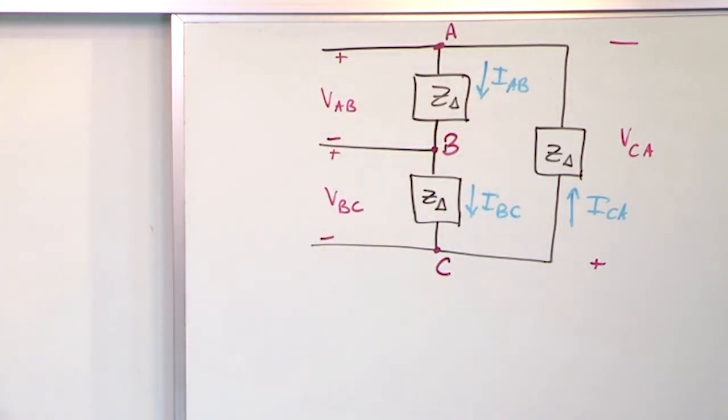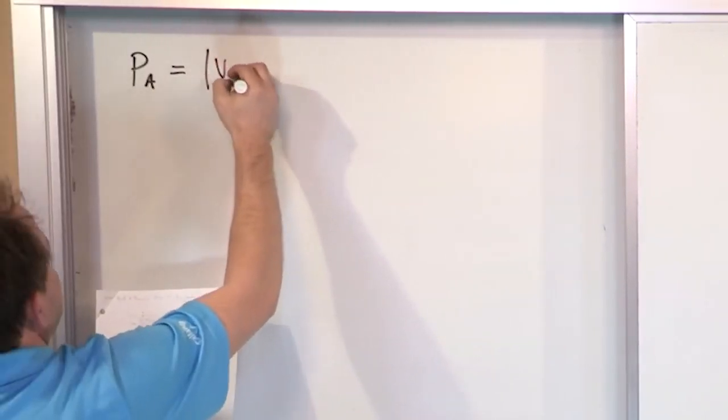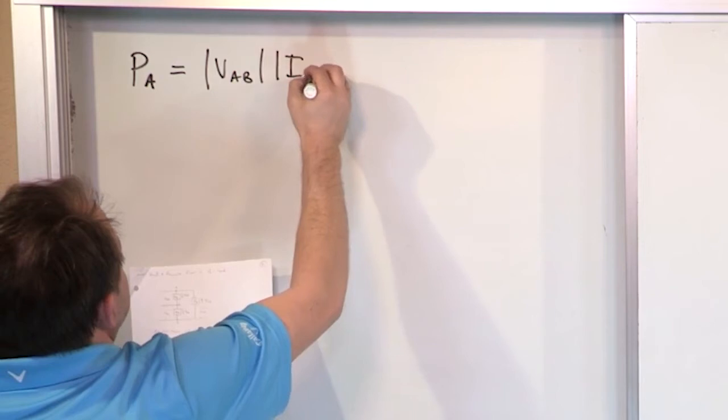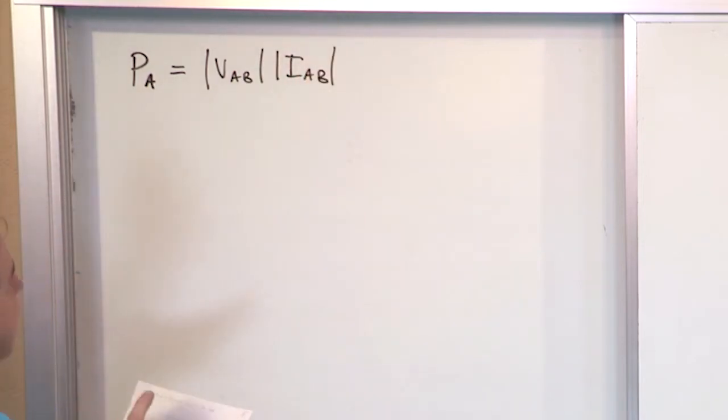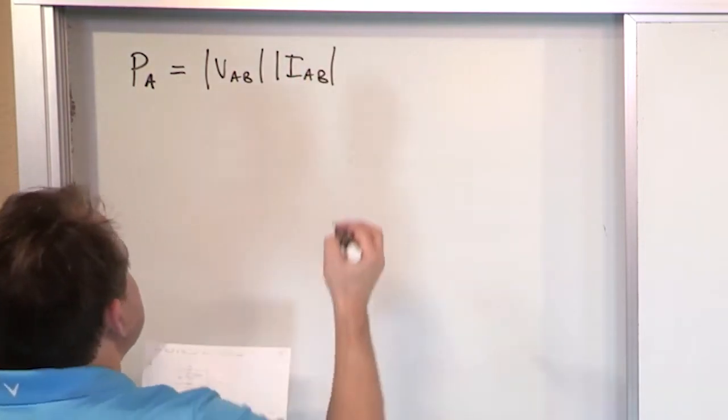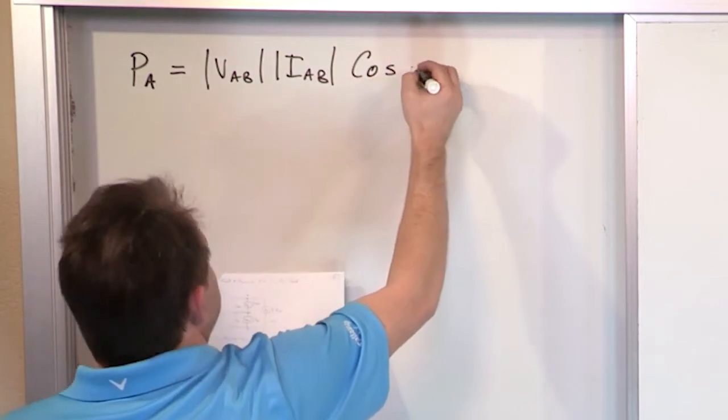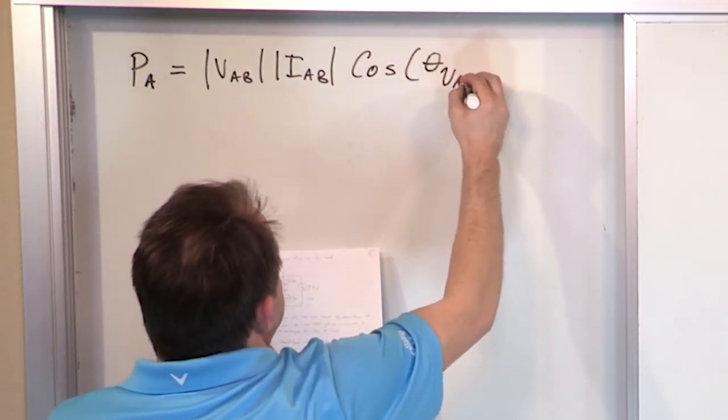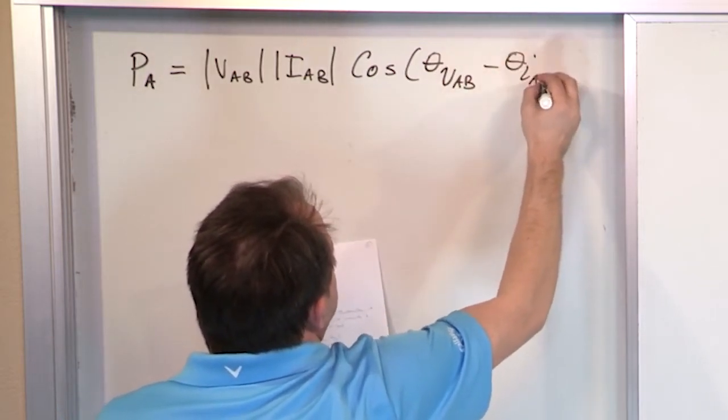So the way we write that is we say VAB magnitude, magnitude IAB, this is the current and the voltage across just phase A load, cosine of theta VAB minus theta IAB. Basically the same cosine here.